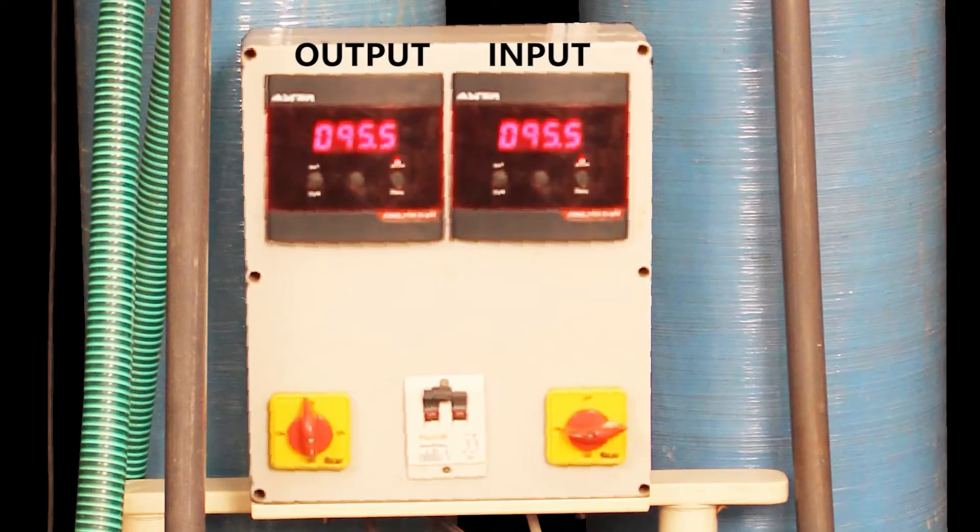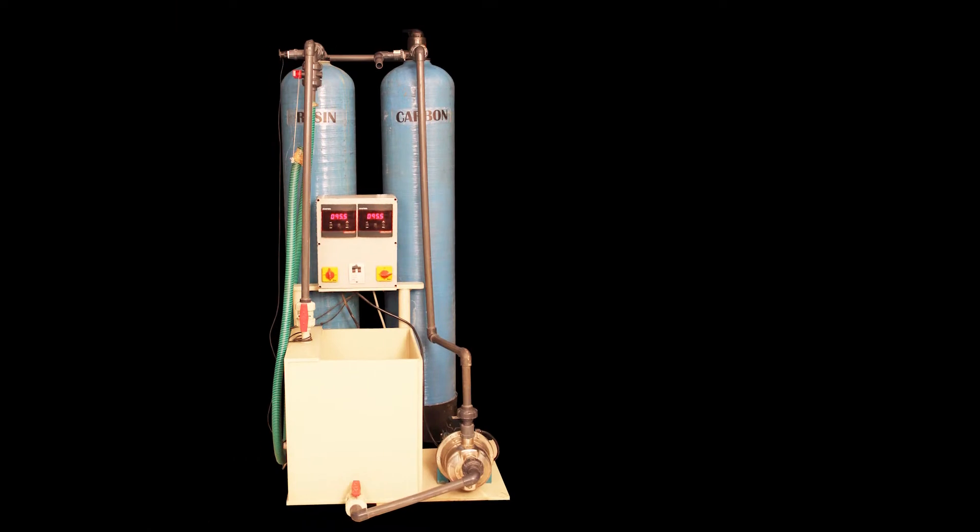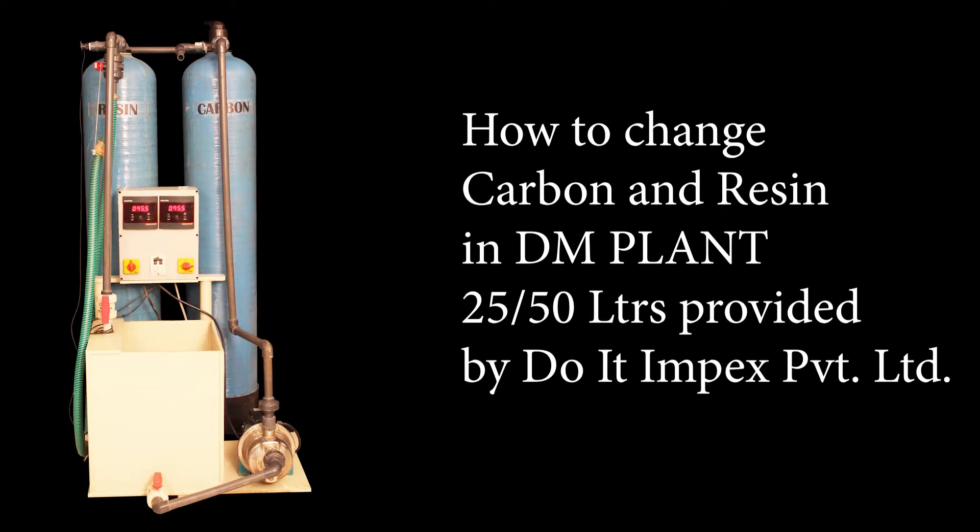A DM plant produces DM water around 0 TDS. If your TDS meter shows a reading above 20, then you will need to change carbon and resin. In this video we will show you how to change carbon and resin in a DM plant.